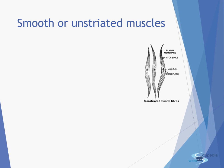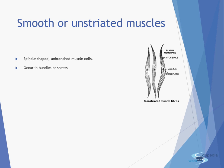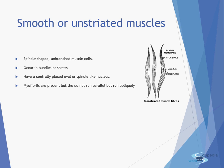Next come the non-striated muscle fibers, also known as smooth or unstriated muscles — smooth because you cannot see the dark and light bands. They are also known as involuntary muscles because they are not under our will. They are spindle-shaped, unbranched muscle cells and occur in bundles or in the form of sheets. The main distinguishing structural feature is that they have a centrally placed oval or spindle-like nucleus, and the myofibrils, while present, do not run parallel — they run obliquely to each other.